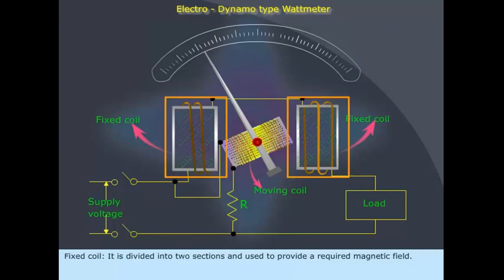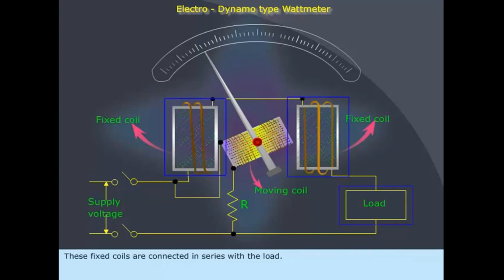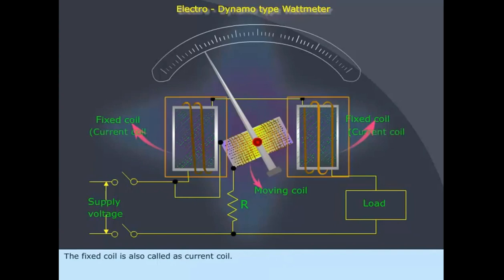Fixed coil: It is divided into two sections and used to provide a required magnetic field. These fixed coils are connected in series with the load. The fixed coil is also called the current coil.